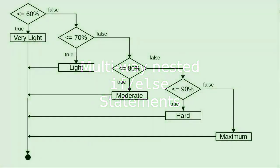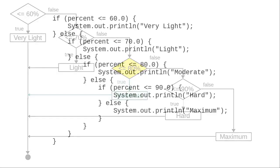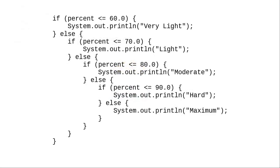Here's the flowchart for what the book calls a multi-way if-else. Depending on the percent of your maximum heart rate, this tells what training zone you're in. Let's try it with 73% of your maximum heart rate. Is 73% less than 60%? No. Is 73% less than or equal to 70%? No. Is 73% less than or equal to 80%? Yes — so our training zone is moderate. Since 73 is not less than or equal to 60, we follow the else, and then ask if 73 is less than or equal to 70. It isn't, so we follow the corresponding else. We ask if 73 is less than or equal to 80 — it is, so we print moderate.